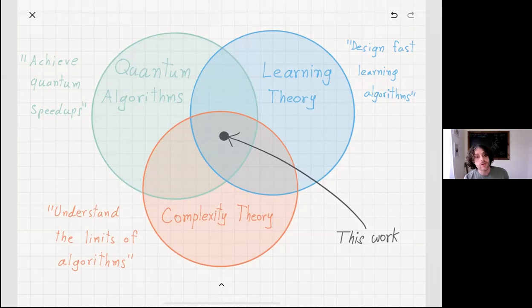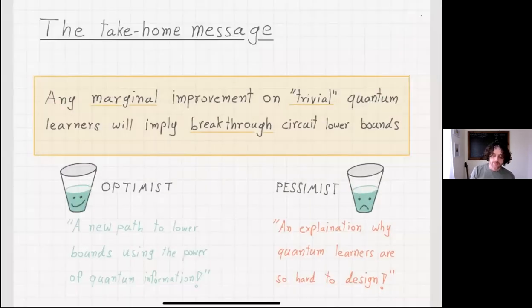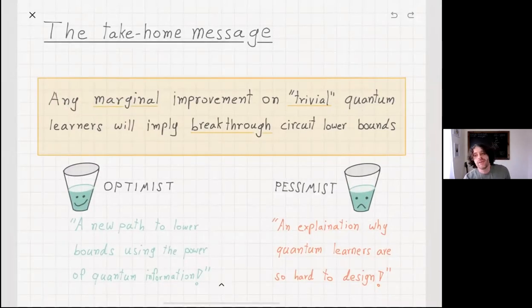Now, since this is a QAP talk, I'm assuming some background in quantum algorithms, but very little in learning theory and complexity theory.